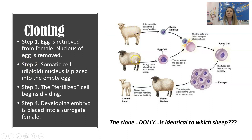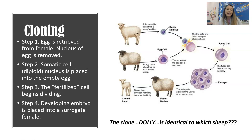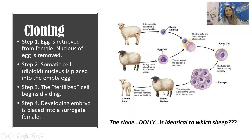To clone Dolly, they took an egg from one sheep and removed its nucleus — remember, the nucleus in an egg is haploid. They took a somatic cell from another sheep — somatic cells are diploid — and popped that diploid nucleus into the empty egg, fusing them together. This tricks the egg into thinking it's been fertilized, since it now has a diploid nucleus. The fertilized egg begins to divide and develop into an embryo, which was then implanted into a surrogate mother sheep, producing Dolly the cloned lamb.